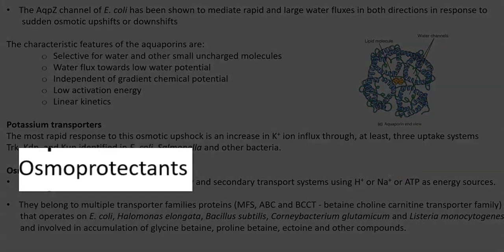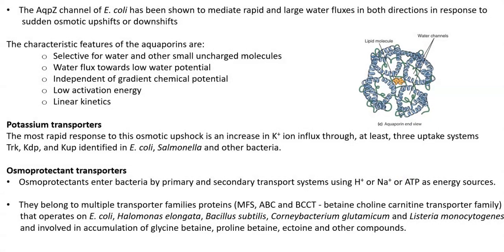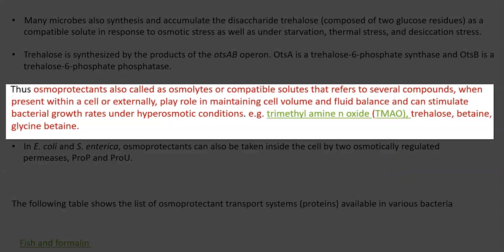The next mechanism involves osmoprotectants. Osmoprotectants are organic compounds called osmolytes or compatible solutes. When present within a cell or externally, they may play a role in maintaining cell volume and fluid balance, and can stimulate bacterial growth rates under hyperosmotic conditions. Examples of osmoprotectants include trimethylamine oxide, trehalose, betaine, and glycine betaine.